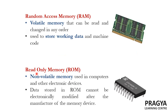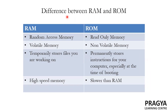Now let's see what is ROM. Read-Only Memory or ROM is a non-volatile memory used in computers and other electronic devices. Since ROM is a non-volatile memory, the data stored in ROM will not be lost even if the power is off. Also, data stored in ROM cannot be electronically modified after the manufacture of the device.